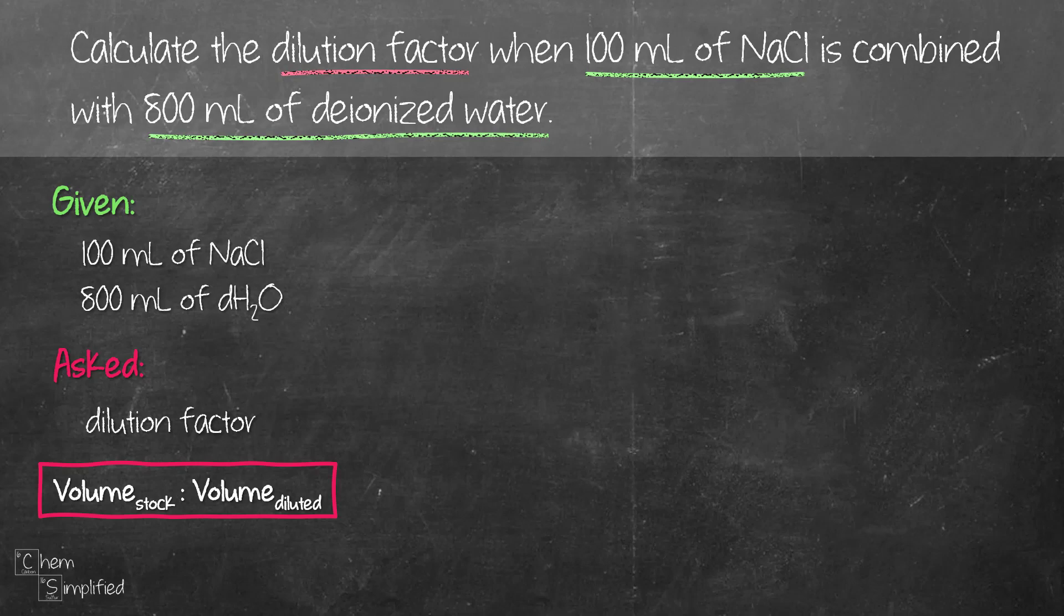So from the question, we know that NaCl is the stock solution and deionized water is the solvent. The volume of stock solution is usually the lesser amount and the volume of the solvent is usually the larger amount.